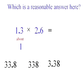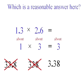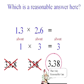1.3 is about 1 to the nearest whole. And 2.6 is about 3 to the nearest whole. So the answer should be about 1 times 3. Very easy to do, isn't it? The answer should be about 3. Well, looking down at your possibilities. It's not that one. It can't be this one. It's got to be about 3. So I actually got the answer without even doing the multiplication.